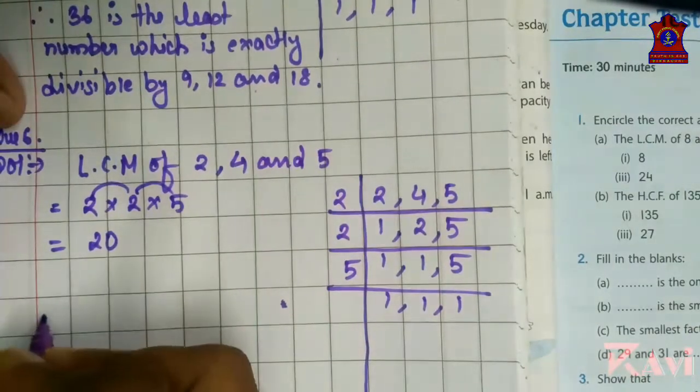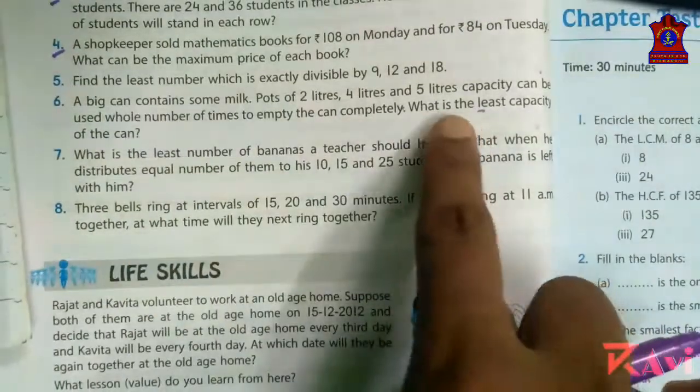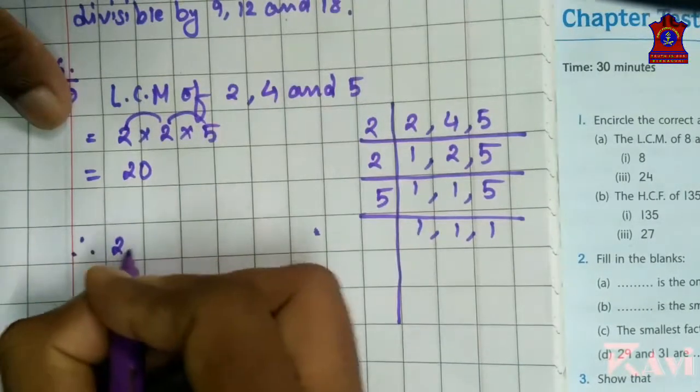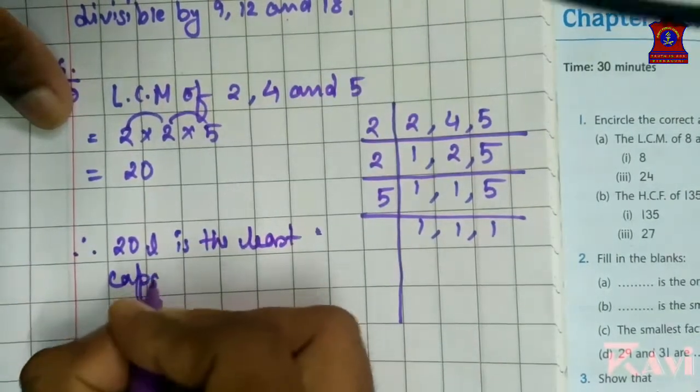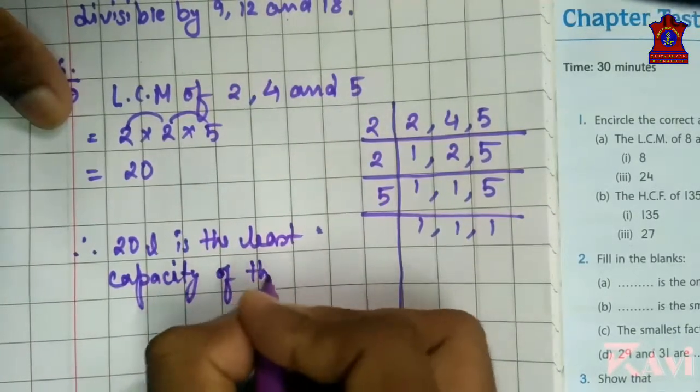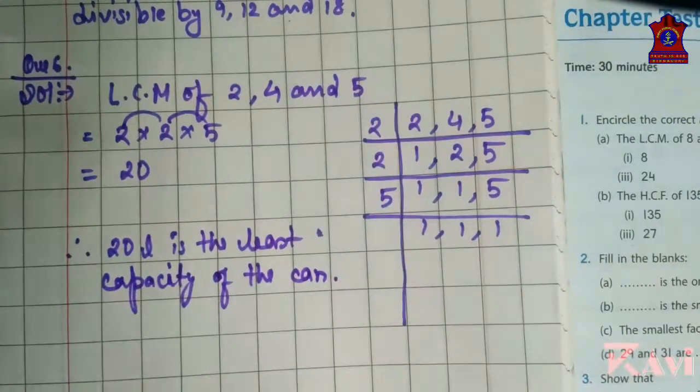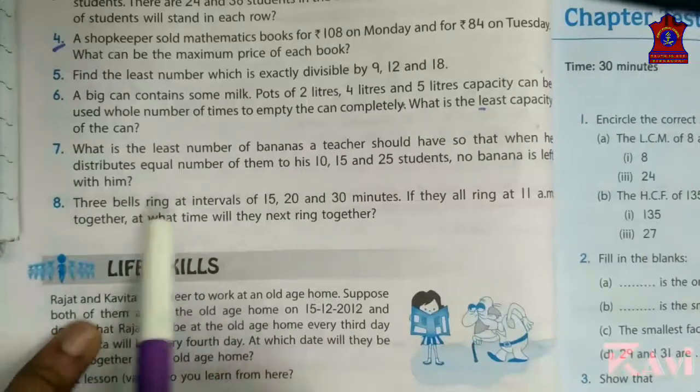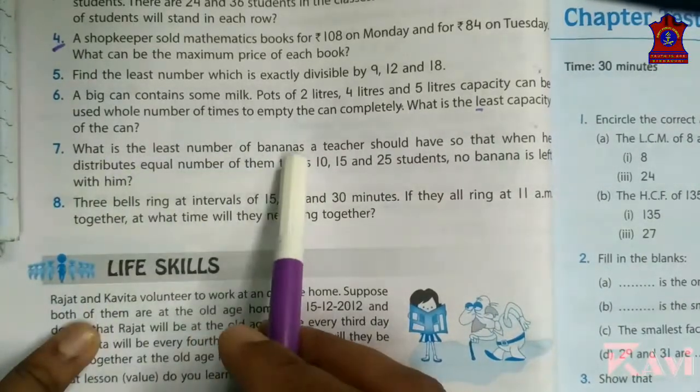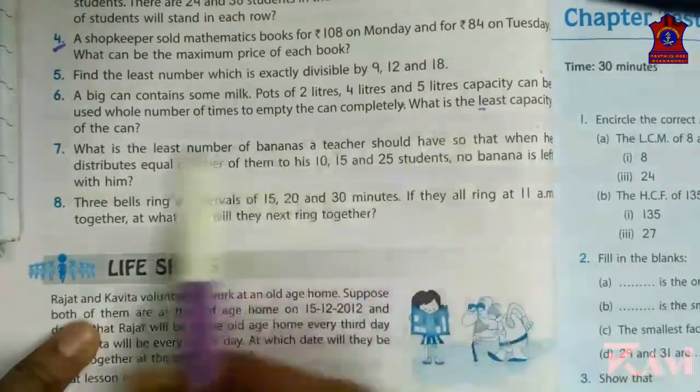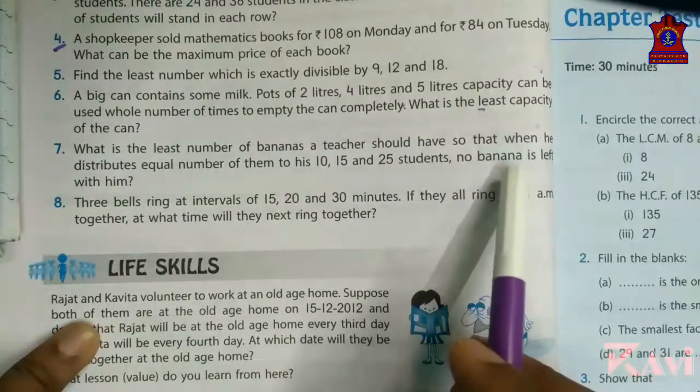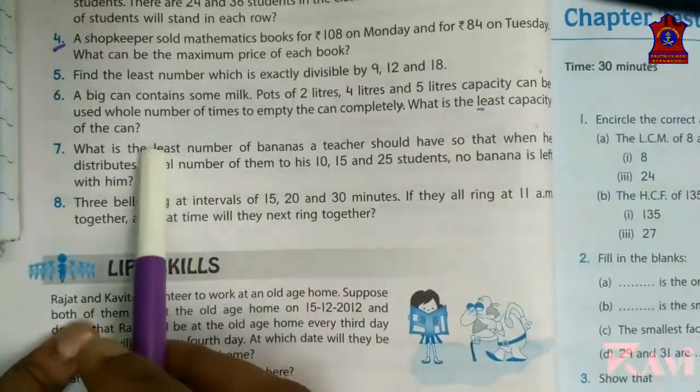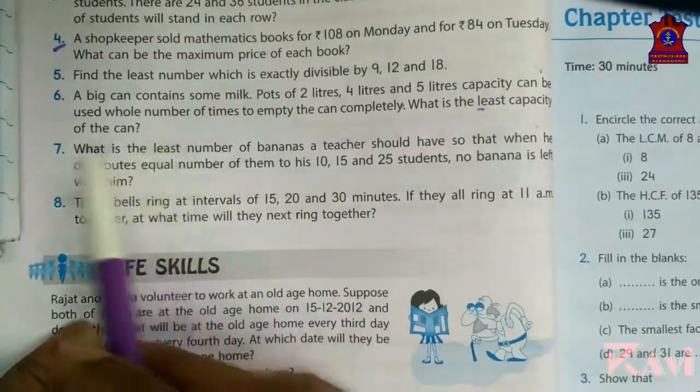Therefore, what is the least capacity of the can? Therefore, 20 liter is the least capacity of the can. Now look at question number 7. What is the least number of bananas a teacher should have so that when he distributes equal number of bananas to his 10, 15 and 25 students, no banana is left with him? Again, it is asking least. So what you will do? LCM by division method. So this question I am giving you as homework. Try this by yourself.